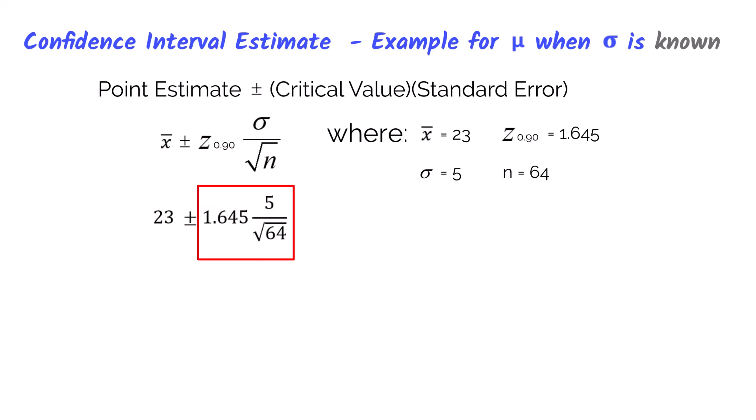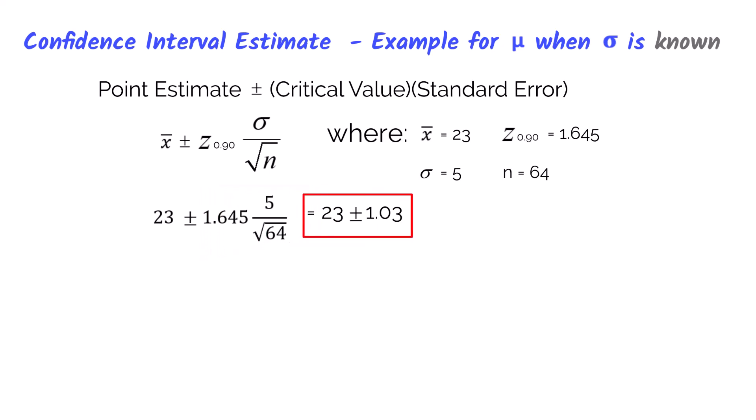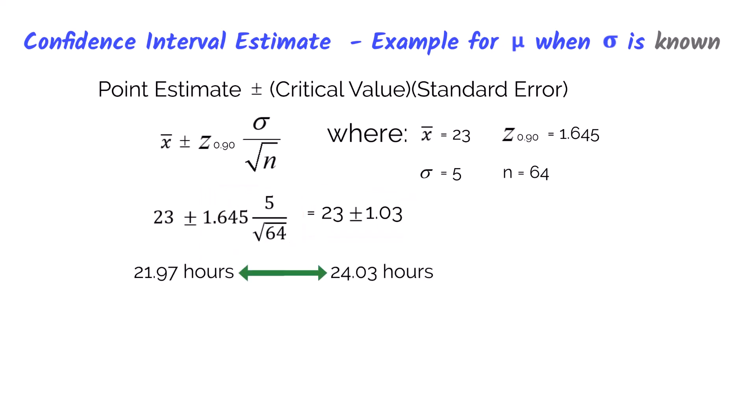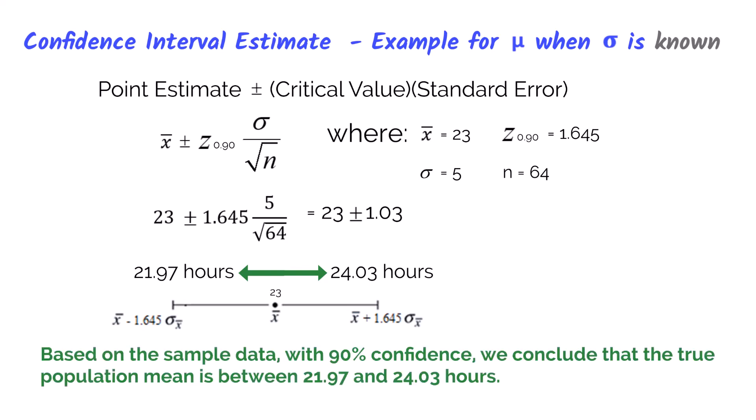Plugging into the formula: the square root of 64 is 8, and 5 divided by 8 is 0.625. Then 1.645 times 0.625 equals 1.03. So we have 23 plus or minus 1.03. Subtracting 1.03 from 23 gives the lower confidence limit of 21.97 hours, and adding 1.03 to 23 gives the upper confidence limit of 24.03 hours. With 90% confidence, we can conclude the true population mean is somewhere between 21.97 hours and 24.03 hours.